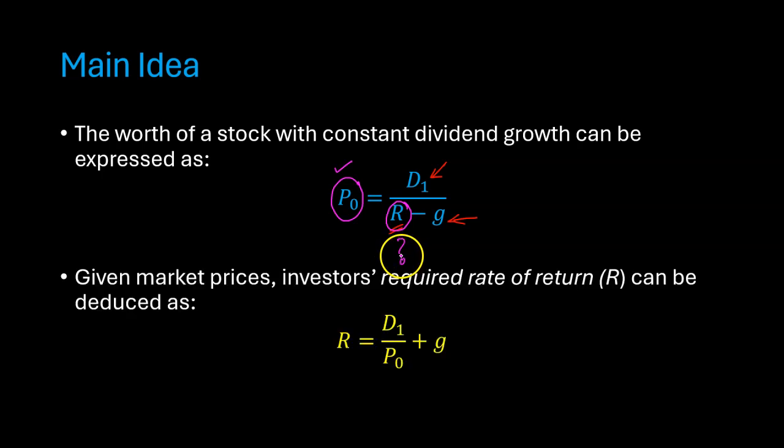However, if we rearrange this equation, then we can determine what is the rate of return that is implied by the price. So if we rearrange this equation, this says that the rate of return that investors require is D1 over P0, which we also refer to as the stock's dividend yield. And then the other part of the return is this growth part, the growth rate in dividends. In fact, it can be shown that this is equal to capital gains. In other words, this is the rate at which we can expect the price of the stock to increase.